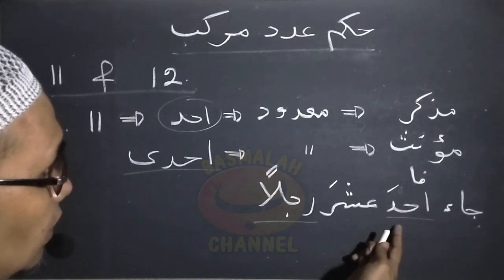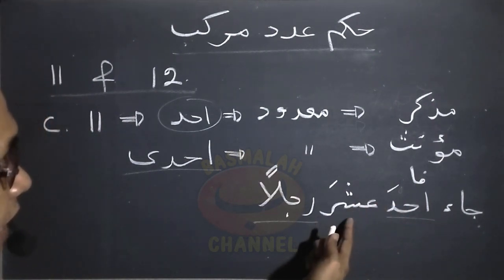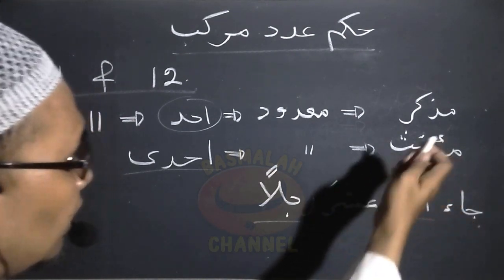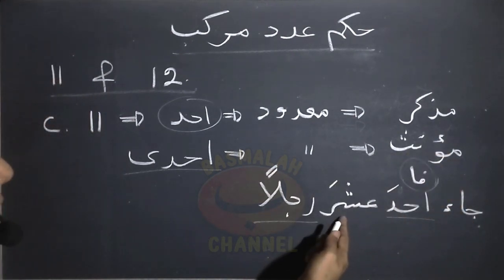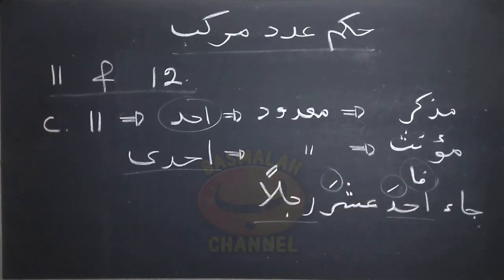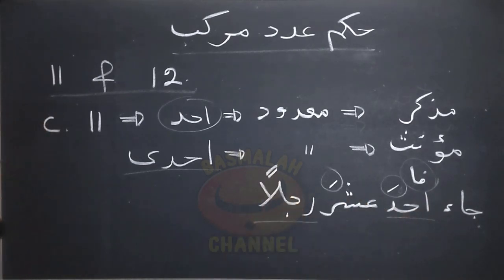Di sini kita perhatikan, makdudnya adalah lafaz Rojulan yang berupa mudakar, maka satuannya menggunakan lafaz Ahadah. Meskipun lafaz Ahadah Ashara ini dalam mahal rafa' sebagai fa'el, namun keduanya — baik satuan maupun puluhannya — tetap dimabnikan fathah. Tidak boleh dibaca: Ja'a Ahadu Ashara Rojulan. Contoh yang lain seperti lafaz: Akromtu Ihda Ashrata Imroatan — saya memuliakan sebelas perempuan.